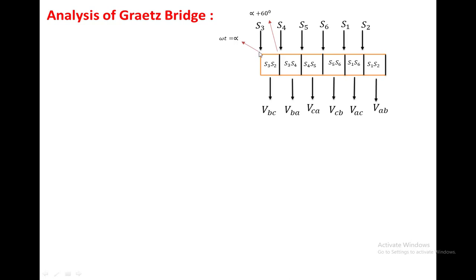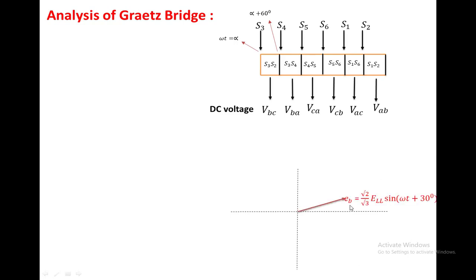This instant we are writing as omega t equal to alpha, and this instant we are taking as alpha plus 60, where S4 is on. Now we are going to see the phasor diagram for the input voltage. We have taken the B phase as a reference: Eb equal to root 2 over root 3 times ELL sin(omega t + 30), where this 30-degree offset applies because it is the reference. ELL is nothing but the RMS line voltage.